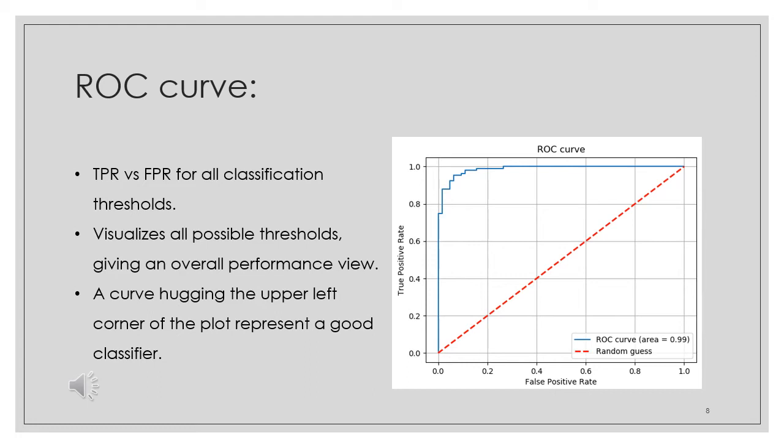However, the thresholds used to generate the ROC cannot actually be seen on the curve itself. A classifier that does a good job at separating the classes will have an ROC curve hugging the upper left corner of the plot. Conversely, the ROC curve hugging the diagonal line represents a classifier that does a bad job. The diagonal line essentially represents a classifier that randomly guesses normally.